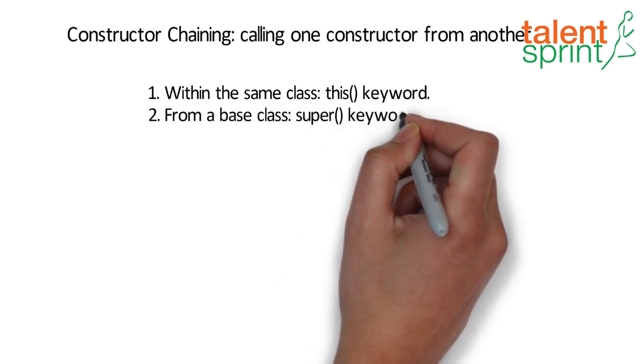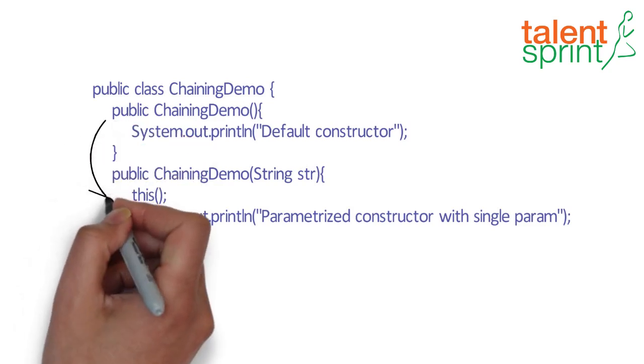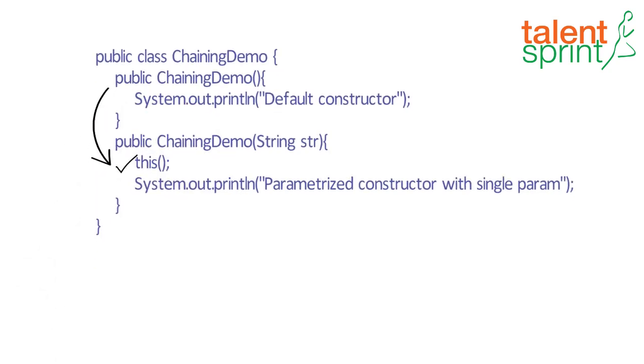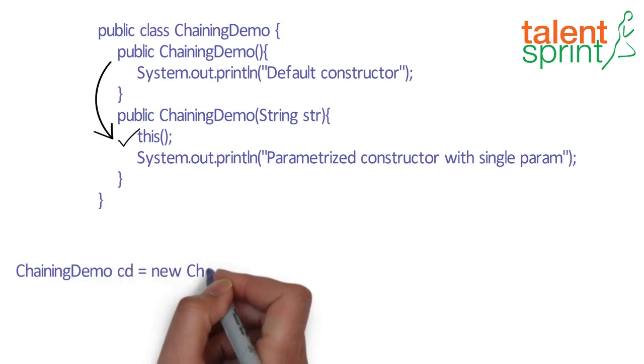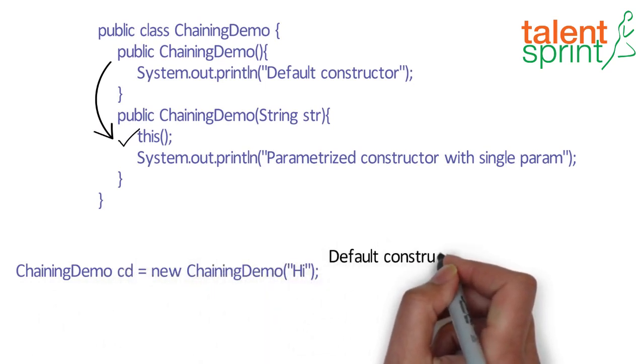So in the example shown, we are calling the default constructor from the parameterized constructor using this. When an object of this class is created, the output would be default constructor followed by parameterized constructor with single param.